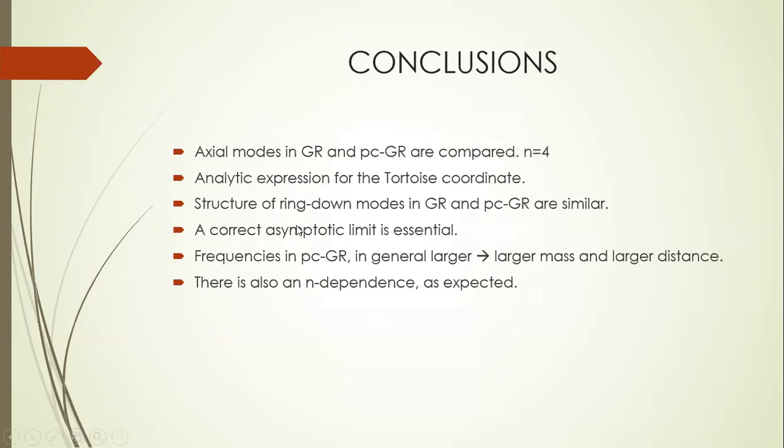Now we come to the conclusions. I discussed axial modes in GR and PCGR, and we used n equal to 4. We also did n equal to 3 calculations, to illustrate the difference between n equal to 4 and n equal to 3. We obtained an analytic expression for the tortoise coordinate, which turns out to be very important to get good convergence, and to get a better asymptotic limit. The structure of GR and PCGR are very similar, at least for low damping modes. For high damping modes, there is an essential difference, and it hints to the possibility that when the main distribution of the ring down is around high damping modes, then the mass of these black holes is significantly larger than assumed in GR, which implies larger distances.